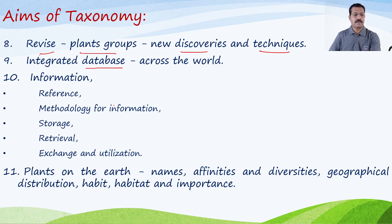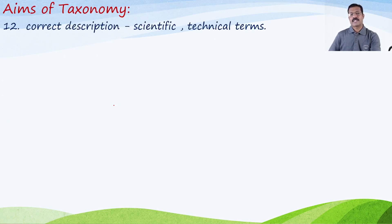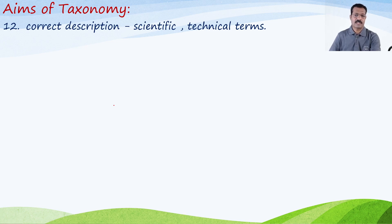All this information has to be stored, collected, and made ready for further use. Next, to give a correct description of plants using scientific language with technical terms. It is very much important that until and unless proper nomenclature and proper naming is given to a plant, it will be confusing to other studying persons, and that is why description using scientific language and proper botanical terms is essential.